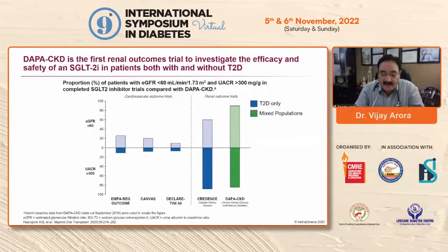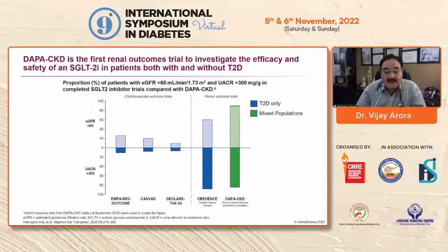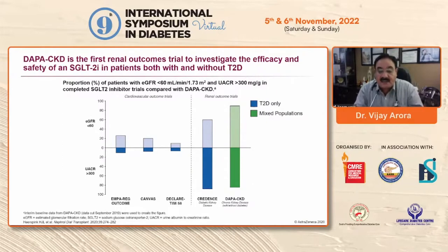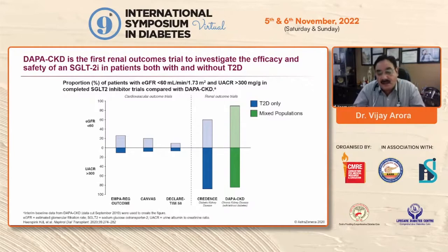DAPA-CKD is the first renal outcome trial to investigate the efficacy and safety of an SGLT2 inhibitor in patients both with and without type 2 diabetes. Comparing with previous trials for cardiovascular safety — DECLARE-TIMI 58, then CREDENCE with canagliflozin, then DAPA-CKD — and now a publication in the New England Journal of Medicine with the EMPA-Kidney trial has reproduced the same findings as depicted in DAPA-CKD.